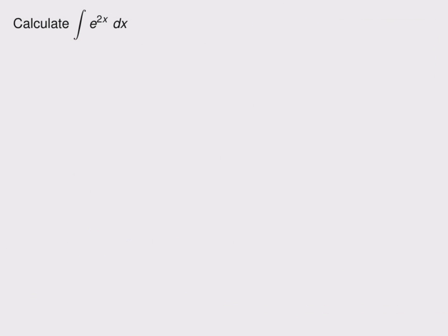The first thing to notice here is that this function is composite. It's easy to miss this, but notice the 2x in the exponent. That, because it's more than just a single variable, is enough to make this composite.